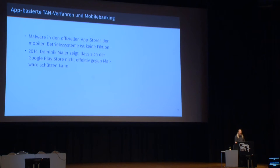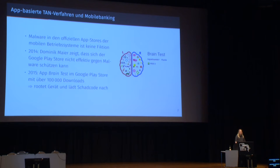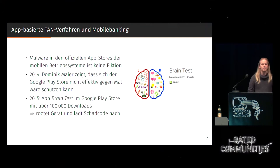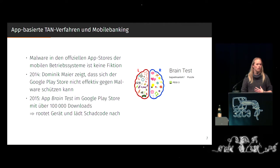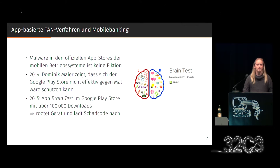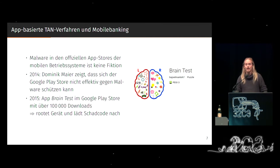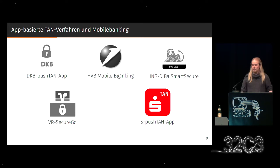That was in 2014, by the way. What he did was he zipped a root exploit — just zipped it and uploaded it. There was no password, nothing else, just uploaded it. But that's not only a theory. At the same time, there was the Brain Test app that had about 100,000 to 500,000 downloads. This app actually demonstrated what the theory suggests for the mobile TAN area — it hacks the software and relies on the hardware.